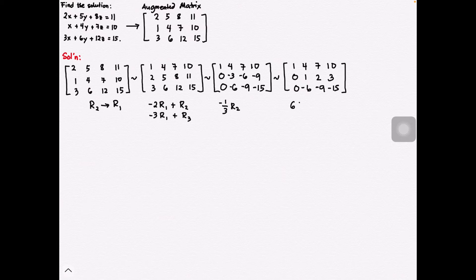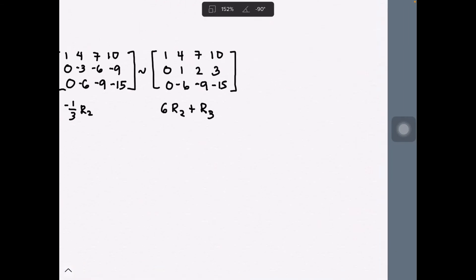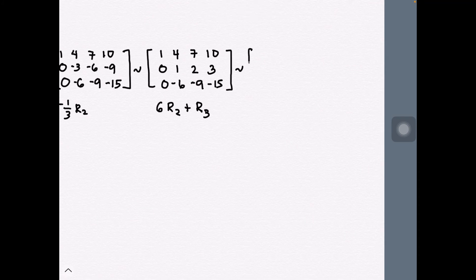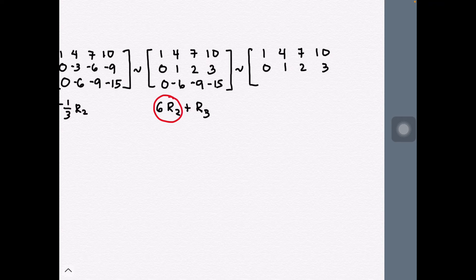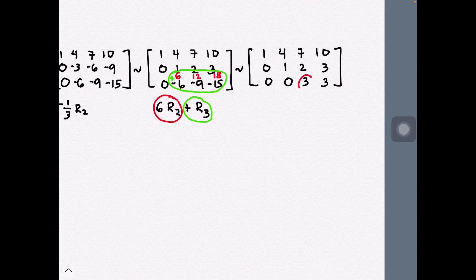So we use a multiplier of six on the second row and add it to the third row. Having six multiplied to the second row gives us new products, and adding them to the corresponding entries of the third row produces the updated third row. Making the remaining entry a positive one means this augmented matrix will be in row echelon form.